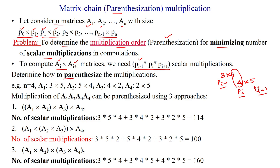How do we apply parentheses between matrices to reduce multiplications? For example, consider four matrices: the first is 3 by 5, the second is 5 by 4, the third is 4 by 2, and the fourth is 2 by 5. How can we reduce the number of scalar multiplications by changing the multiplication order? We will use three different parenthesization approaches.